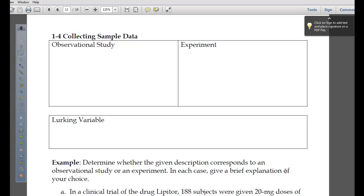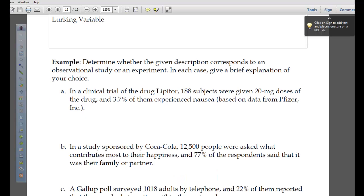Usually we can kind of discover that through one of these study types. What we want to focus on mainly here in the next examples would be whether the given description corresponds to an observational study or an experiment. In each case, give a brief explanation of your choice.